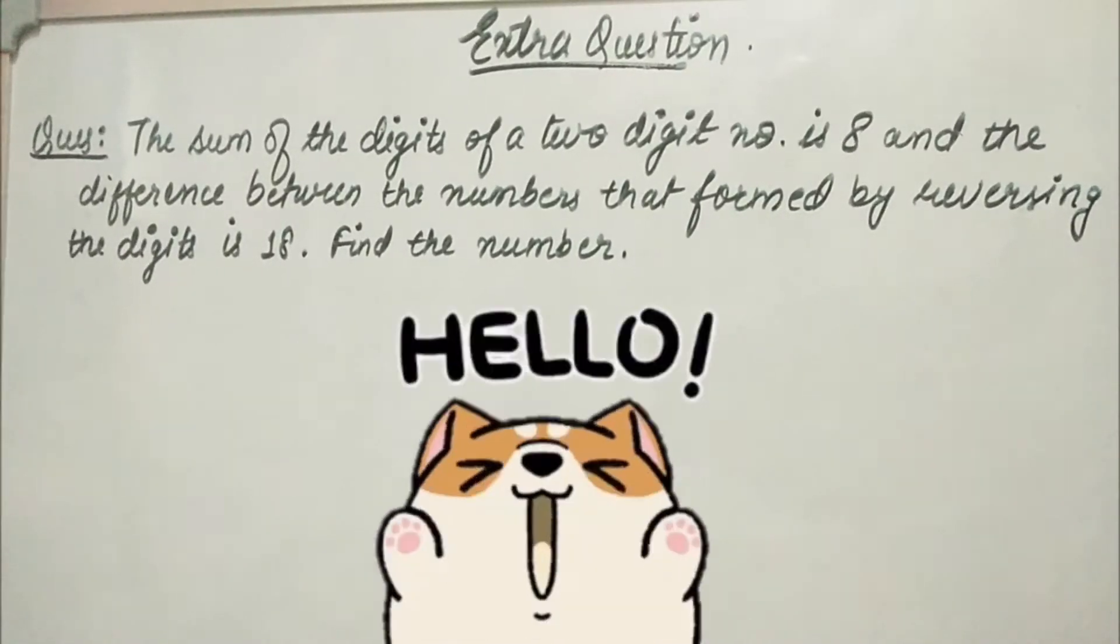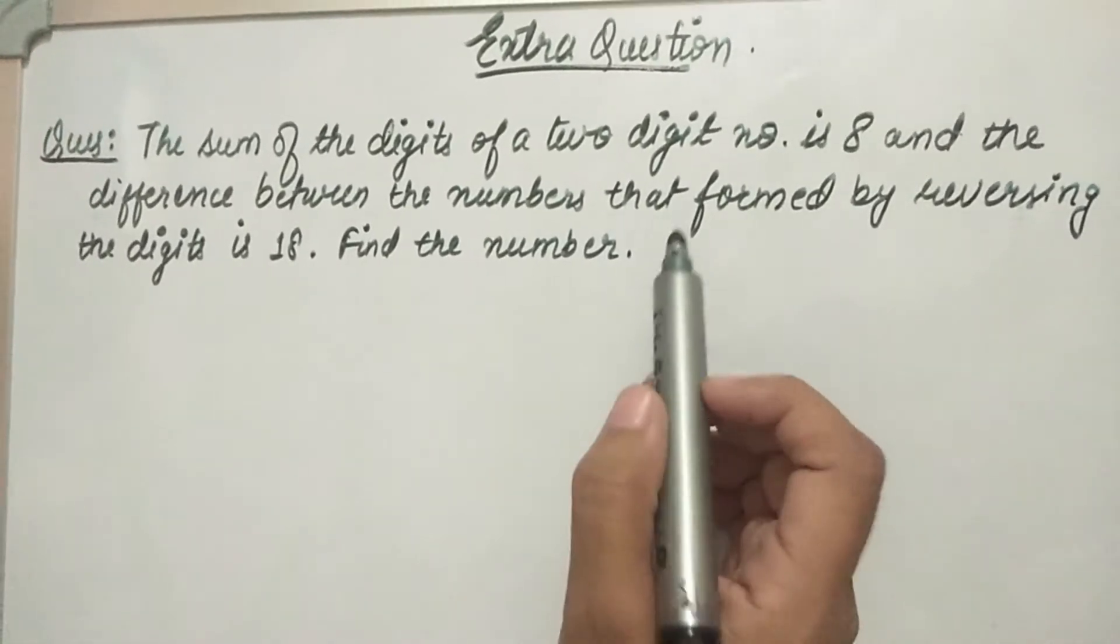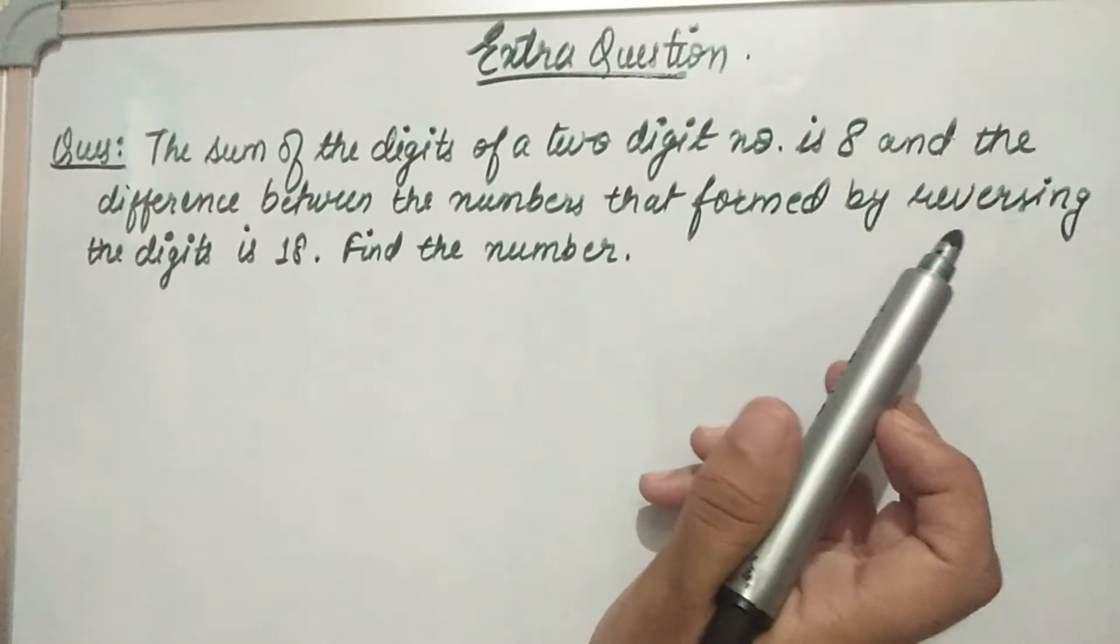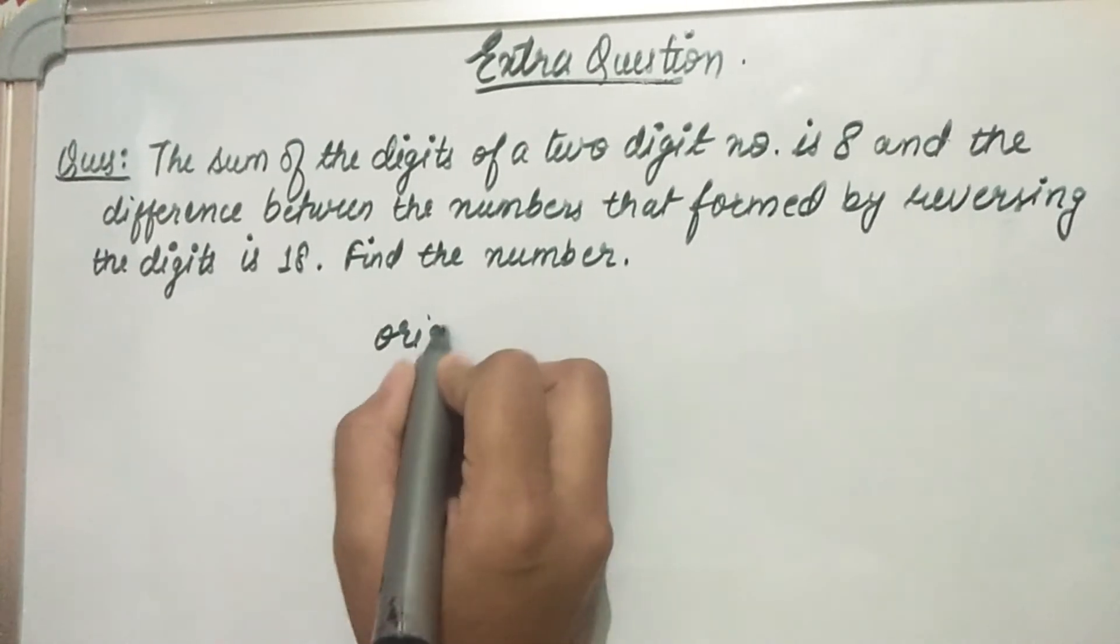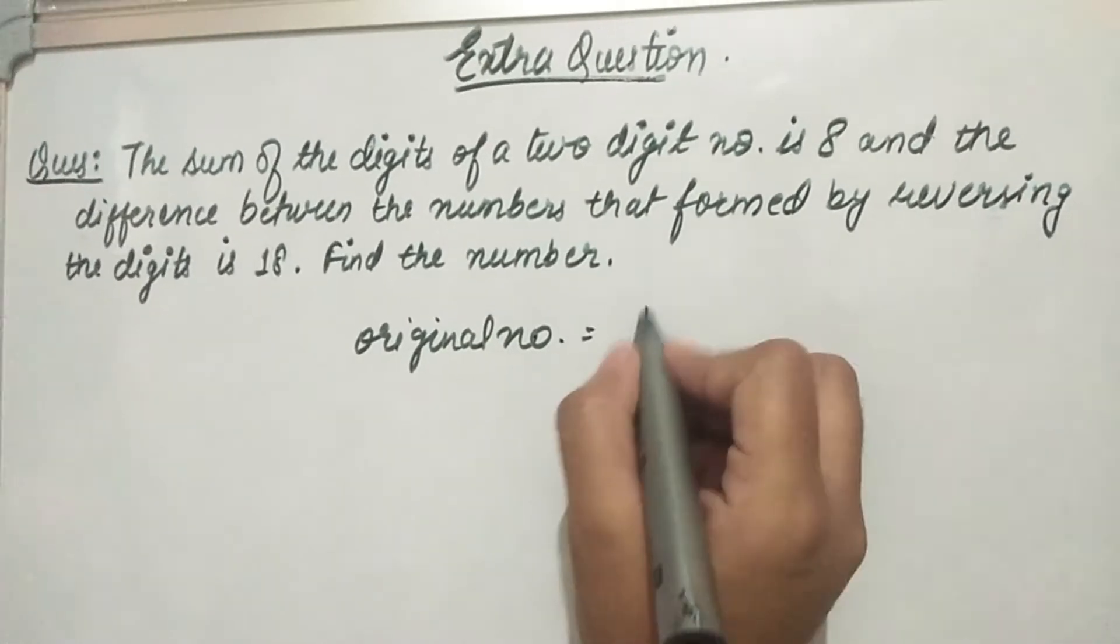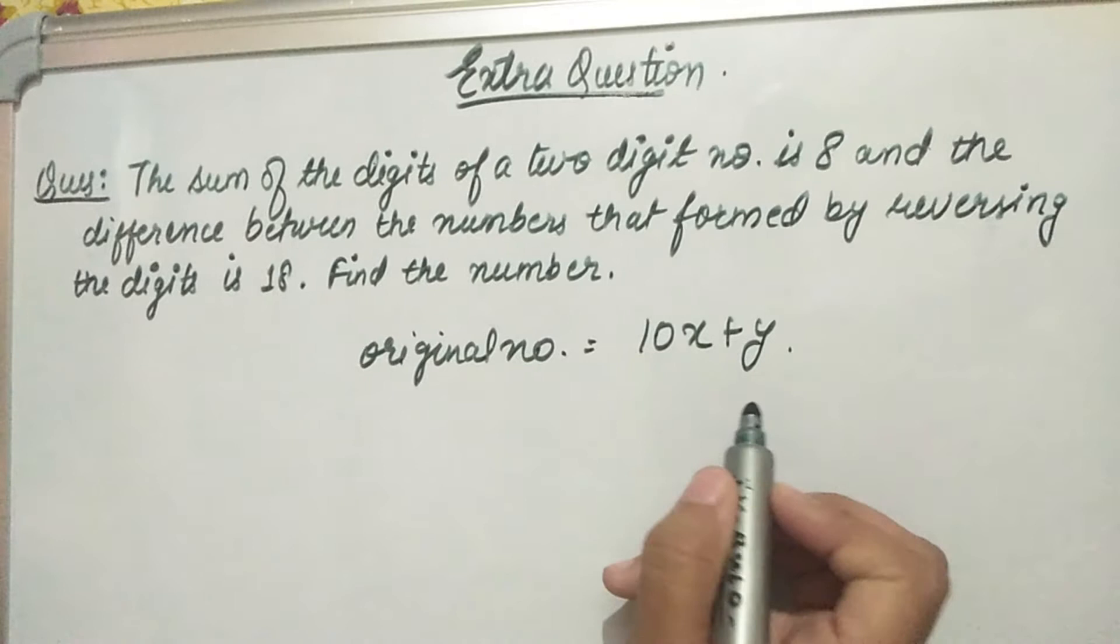Hello guys, welcome back to my channel Plus Minus Maths. Today's question is: the sum of the digits of a two-digit number is 8. So we suppose that the original number is 10x plus y, which is a two-digit number.